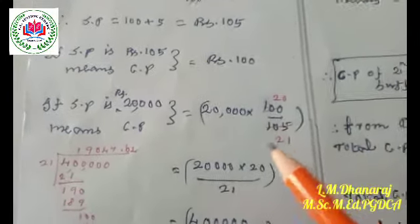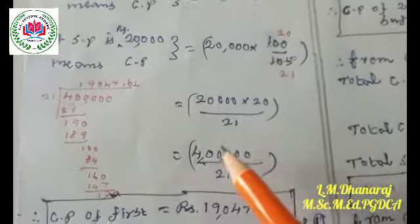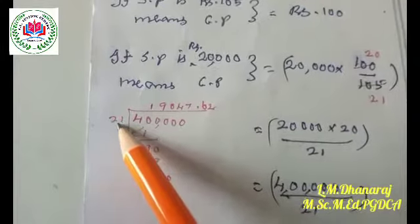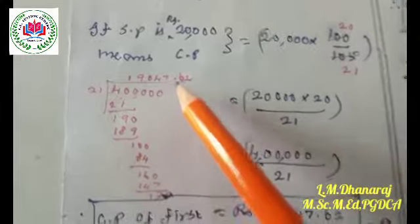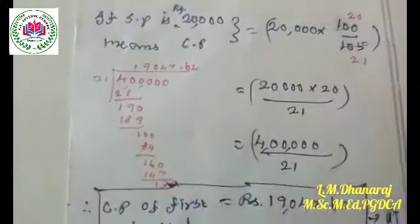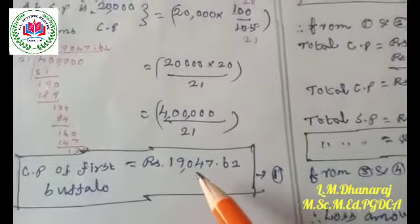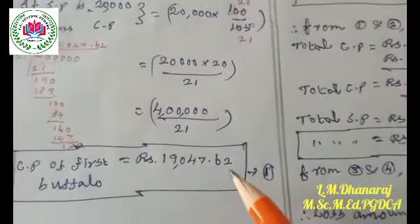So it becomes 20,000 into 20 divided by 21. When we multiply 20,000 into 20, that becomes 4 lakhs divided by 21. Dividing 4 lakhs by 21, we get rupees 19,047 and 62 paise. So the cost price of the first buffalo is rupees 19,047.62. Mark this as equation number one.